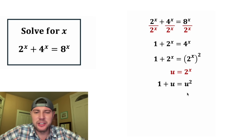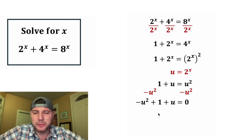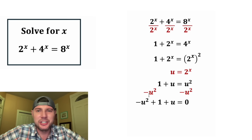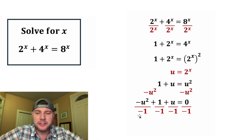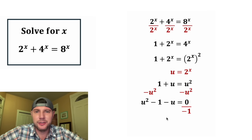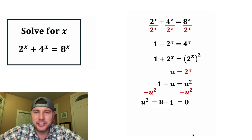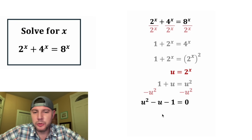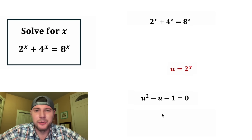Now we have a quadratic equation. Let's set it equal to 0 by subtracting u squared from both sides, giving us negative u squared plus 1 plus u equals 0. I like the leading coefficient to be positive, so let's divide everything by negative 1. The negatives cancel, the plus 1 becomes minus 1, and the plus u becomes minus u. Rearranging in descending order: u squared minus u minus 1 equals 0.